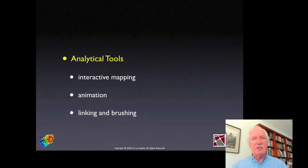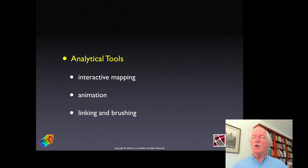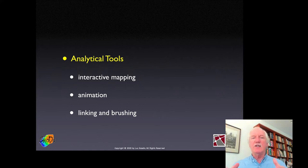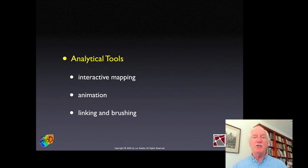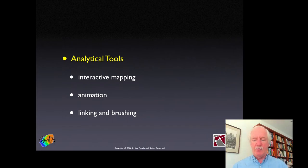How do we do this? We'll see much more this week and next week. Interactive mapping — you don't just use the map as the final product, but actively engage with the data and change the map as you learn more. Animation — making things move. And connecting different views of the data through linking and brushing, as we'll see next week.